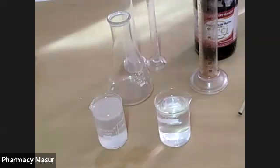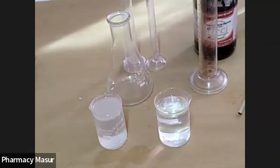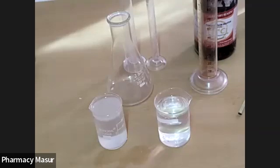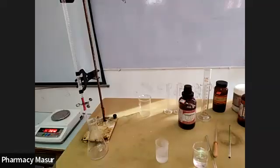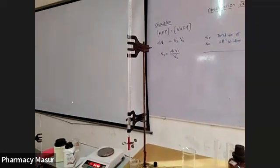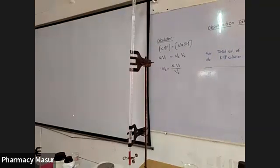We have to add the NaOH solution into the burette and the KHP solution into the conical flask, which acts as the titrate. The 0.1 normal NaOH is added into the burette, and the lower meniscus of the NaOH should be matched with the 0 level.